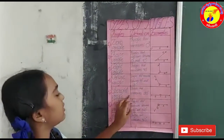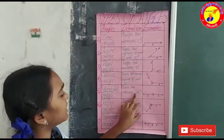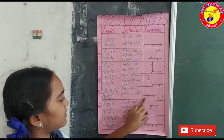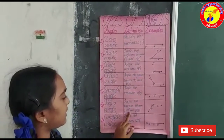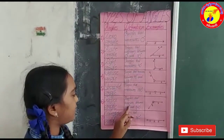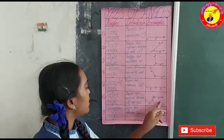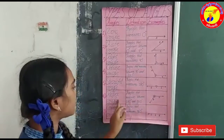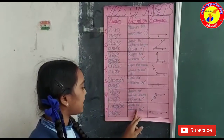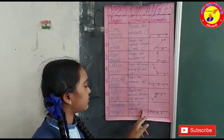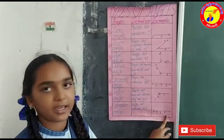Straight angle — exactly one hundred eighty degrees is called a straight angle. Reflex angle — between one hundred eighty degrees and three hundred sixty degrees is called a reflex angle. Complete angle — exactly three hundred sixty degrees is called a complete angle.